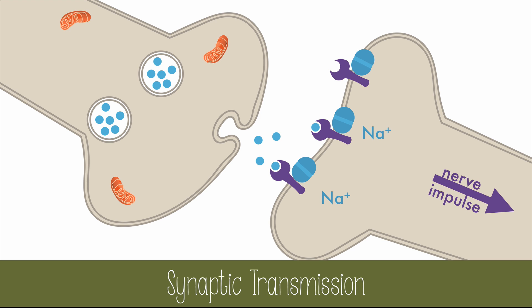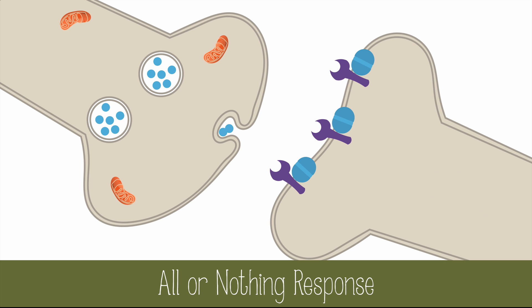Then the neurotransmitters are broken down and removed from the synaptic cleft. If there isn't enough neurotransmitter binding to receptors, then there won't be enough sodium flowing into the cell to reach threshold potential. This means that there is an all-or-nothing response — either there is enough neurotransmitter to start the action potential and the impulse is sent, or there is no impulse. In this case, the neurotransmitters will be broken down and the sodium-potassium pumps will restore resting potential in the post-synaptic cell.